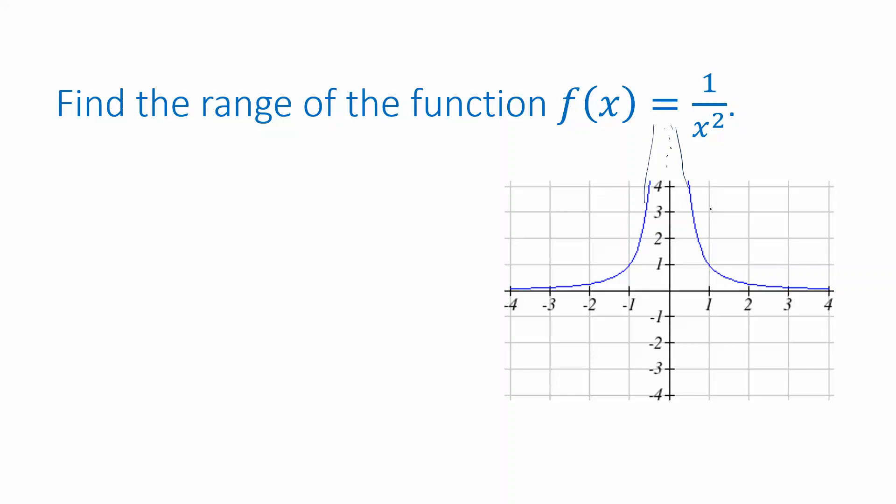And that should make sense. After we've seen the graph, we see that we won't get a negative number out. But now we can also reason about that algebraically because x squared, no matter what I plug in for x, x squared is going to be positive. And then the reciprocal of a positive number is also a positive number.